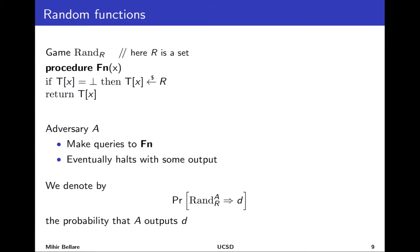Our adversary talks to this box, giving X's and getting back random stuff, then eventually halts and has some output — often a bit. We want to look at these outputs, which occur with some probability due to all the random choices going on. For a particular output D — often 1 or 0 or true or false — it will occur with some probability. We write this as: given the game RAND_R with superscript adversary A, what is the probability that the interaction results in output D from the adversary.